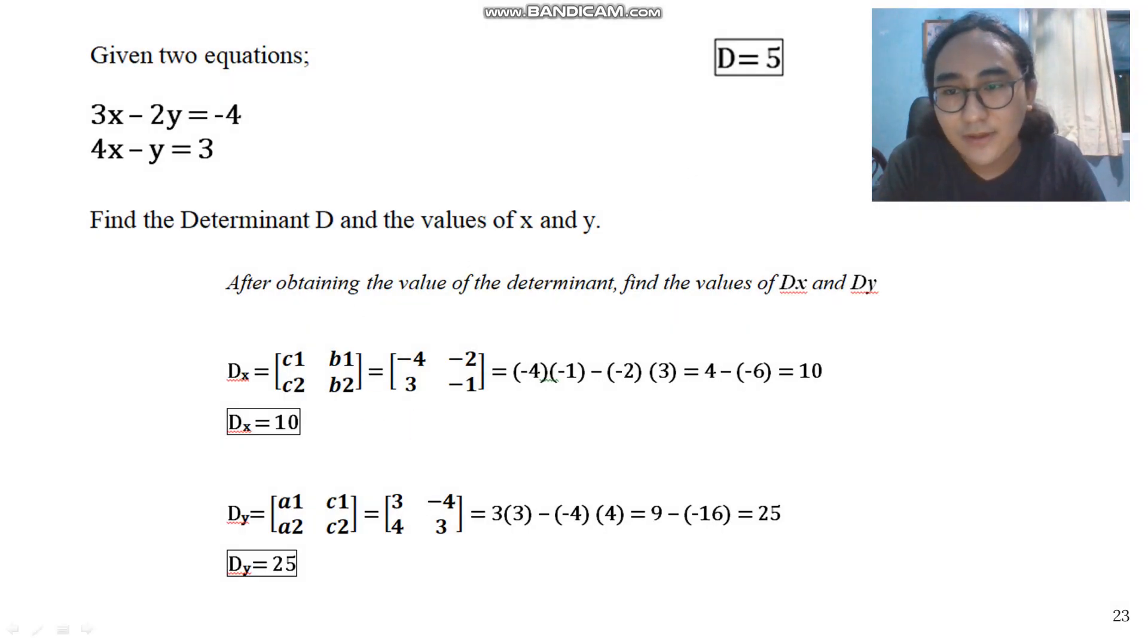So, after getting the determinant, we're gonna find the values of dx and dy. This is the formula for dx. c1, c2, b1, and b2. Again, I've taught you which one is c and which one is b. Substituting the values here will give us this matrix. And if we solve this matrix, the value will be 10.